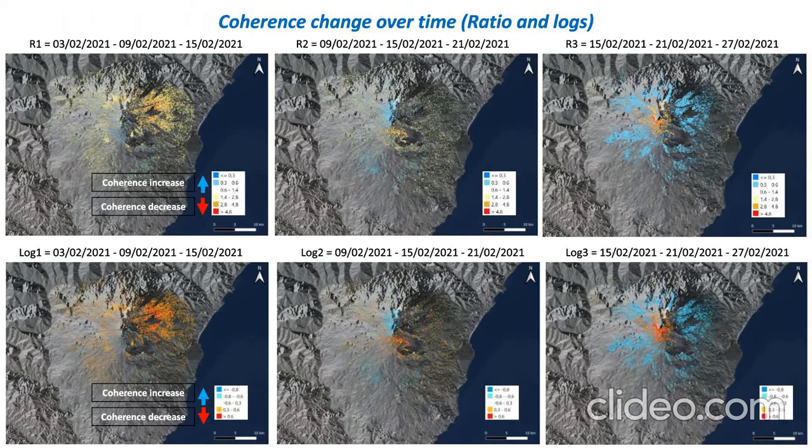Here are my results, shown with legends where below one means a coherence increase and above one means a coherence decrease. More or less the same applies for the log, except the limit is zero — below zero is a coherence increase and above zero is a coherence decrease.